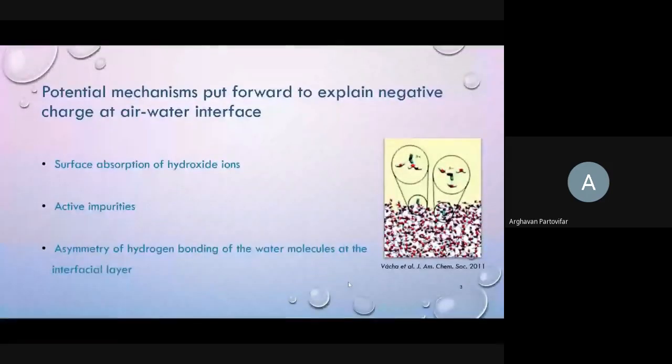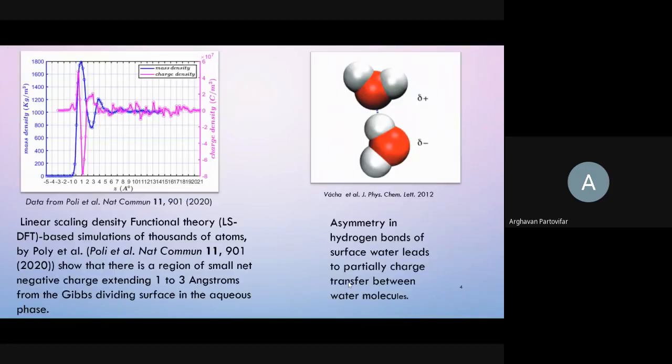One interpretation proposed to explain this negative charge is accumulation of hydroxide ions at the water surface. Another is presence of trace amounts of surface active charge priorities. Another potential mechanism is anisotropy of intermolecular hydrogen bonds at the air-water interface.